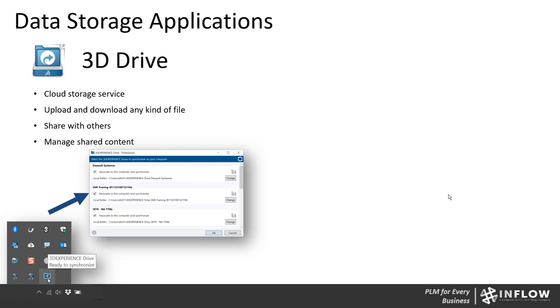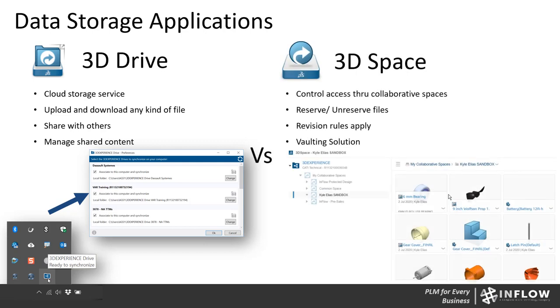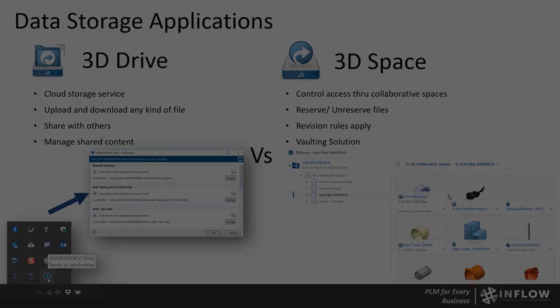3D Drive feels like just another Windows folder, but you're actually synchronizing to a cloud storage solution. The other one is 3D Space, which is very different. 3D Space is your vaulting solution — it allows revision control, maturity graphs or workflows, and check-in/check-out capability (reserved and unreserved in 3D Experience). So while 3D Drive is for storing personal files, 3D Space is where you share content with others and store your company data.